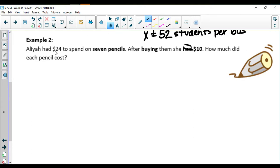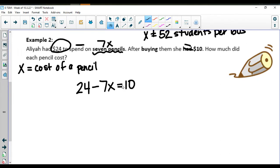If we have $24 to start and we're spending it, when we spend our money we're going to be subtracting and we're buying seven pencils. Do we know how much the pencils cost? We don't. So it's going to be seven times X and X is going to represent the cost of a pencil.